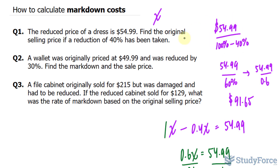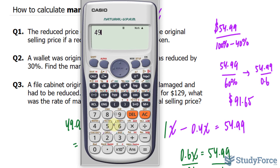In question number two, we're asked: a wallet was originally priced at $49.99 and was reduced by 30%. Find the markdown and the sale price. The markdown can be found by taking the original price of $49.99 and multiplying it by 0.3. This will tell us how much will be taken off from $49.99.